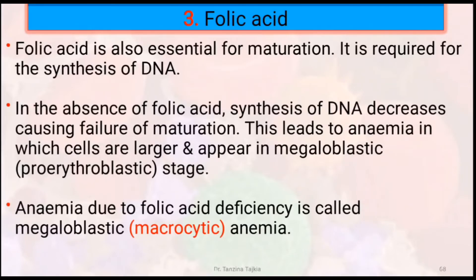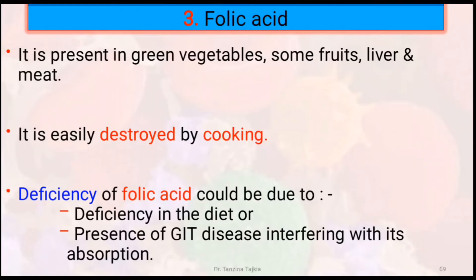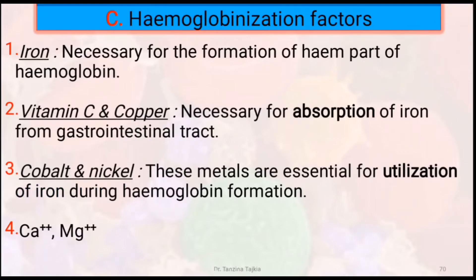Anemia due to folic acid deficiency is called megaloblastic anemia. Folic acid is present in grain vegetables, some fruits, liver, and meats. It is easily destroyed by cooking. Deficiency of vitamin B12 could be due to deficiency in diet or the presence of GIT disease which interferes with absorption. Hemoglobinization factors include iron, vitamin C, copper, cobalt and nickel, and calcium and magnesium ions. Iron is necessary for the formation of the heme part of hemoglobin. Vitamin C and copper are necessary for absorption of iron from the gastrointestinal tract. Cobalt and nickel are essential for utilization of iron during hemoglobin formation.